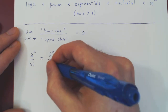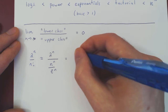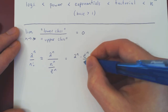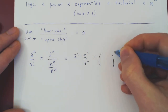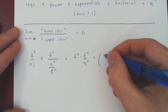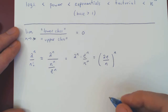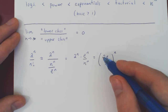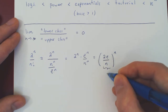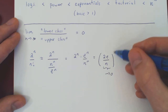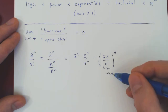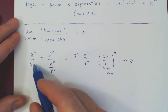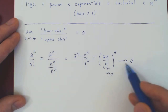n factorial is roughly n to the n over e to the n. Dividing by a fraction means multiplying by the reciprocal, and combining everything over n, you'll have (2e/n) to the n — with 2 times e as your numerator and n as your denominator. Now, as n goes to infinity, 2e is a constant over n, so this shrinks to zero. And if you take a larger and larger power of something shrinking to zero, it shrinks to zero as well. This shows that any exponential over a factorial, as n goes to infinity, has a ratio that shrinks to zero.